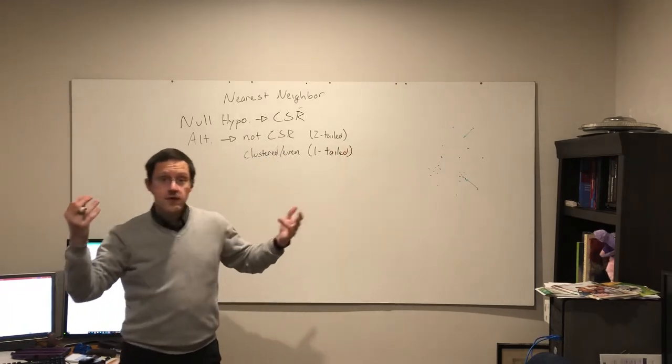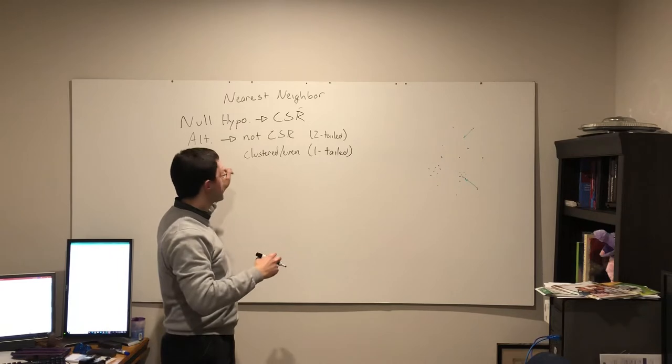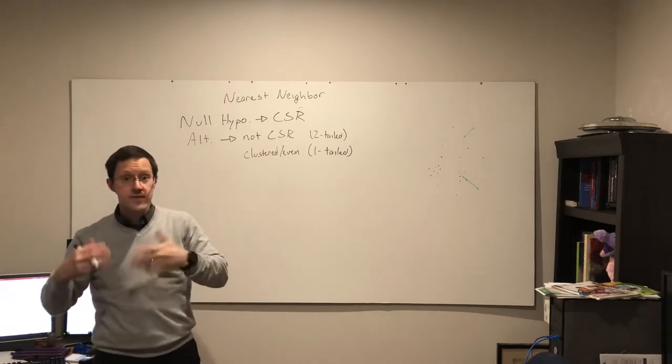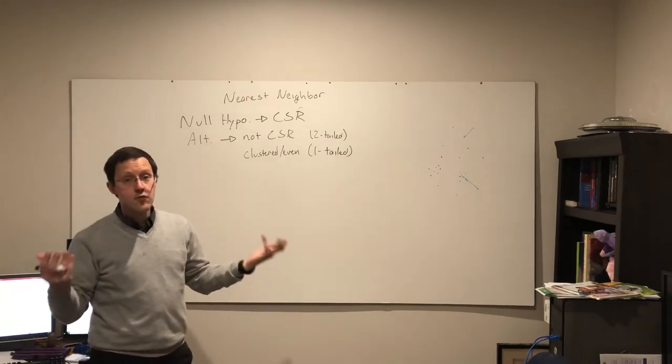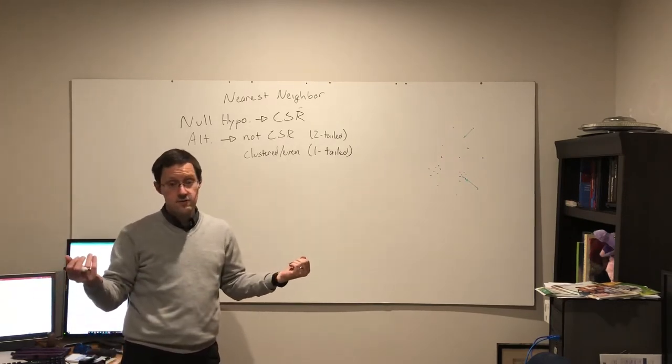Again, the null hypothesis, complete spatial randomness. As with the z-test and the t-tests that are very similar, we can do this as a one-tail or a two-tail test. If we do two-tail, it's just a question of is it random or is it not random.